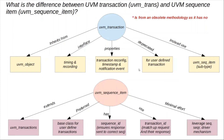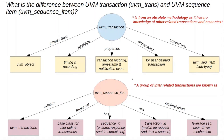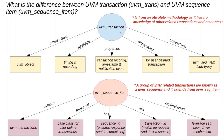In summary, UVM transaction is an obsolete old methodology which is not used anymore, as it has no context of who the parent sequence is or whether a particular transaction is part of a group of transactions. On the other side, you have the UVM sequence item with an added advantage of having a sequence ID. It is actually aware of what the related or interrelated transactions are, which ultimately is known as a UVM sequence. So if you're able to remember this, you should be able to answer any question about the differences between the two, what the preferred methodology is, and why a UVM transaction is something that is obsolete now.